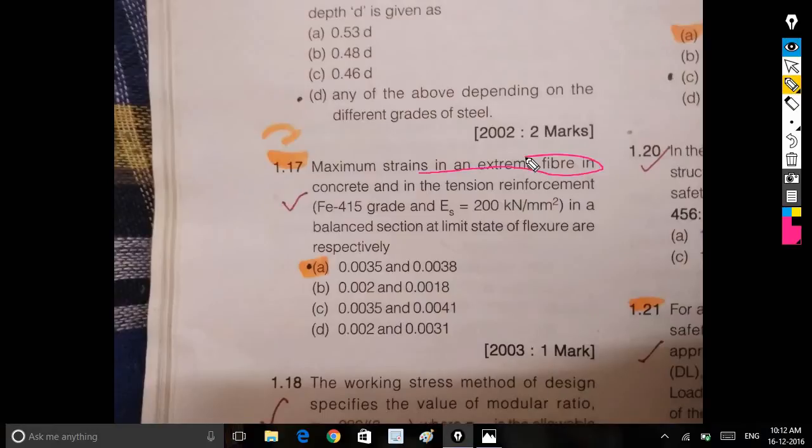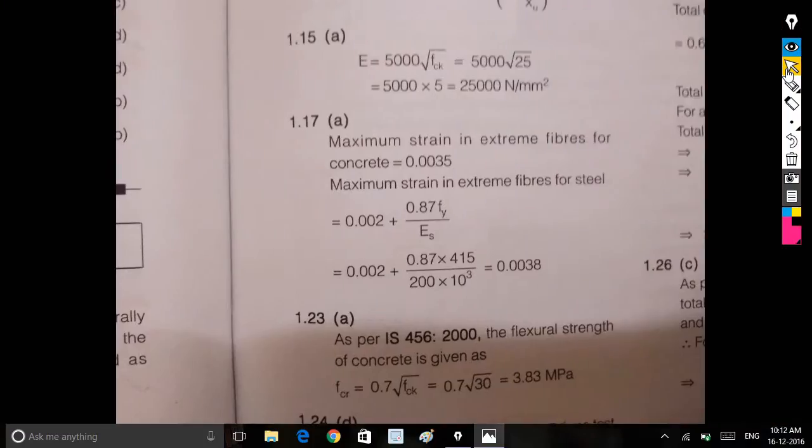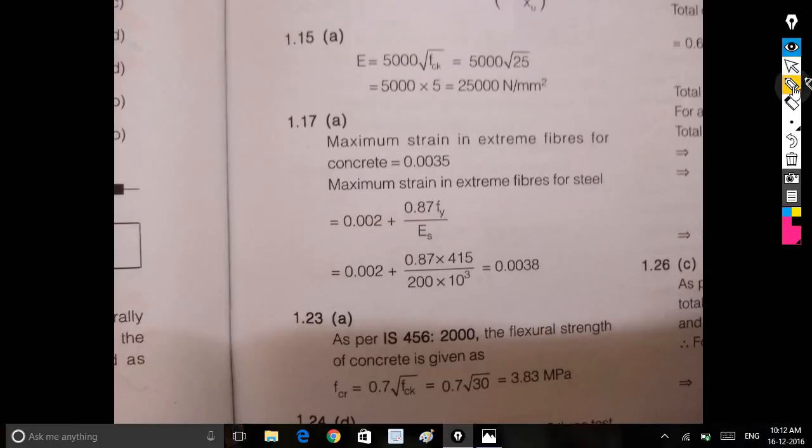The maximum strains in extreme fibers in concrete in tension reinforcement and compression reinforcement. In a balanced section, 0.003 strain in concrete and 0.0038 in tension reinforcement.